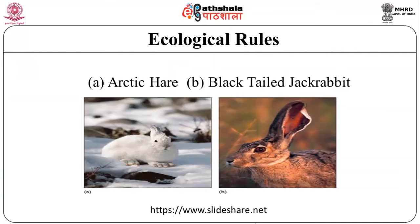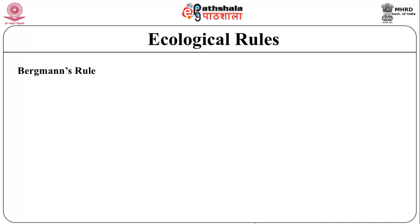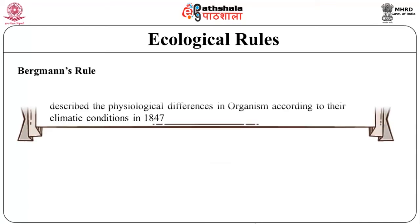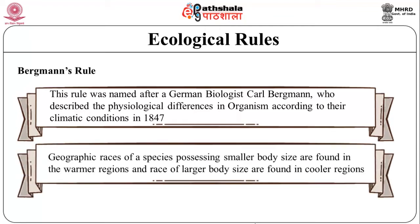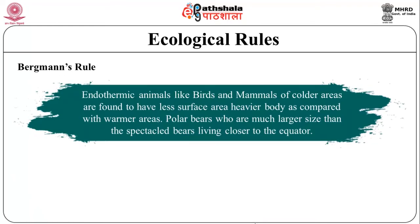Another ecological rule is Bergman's Rule, named after German biologist Karl Bergman, who described physiological differences in organisms according to their climatic conditions in 1847. According to Bergman's Rule, geographic races or ethnic groups of a species possessing smaller body size are found in warmer regions, and those of larger body size are found in cooler regions. Endothermic animals like birds and mammals in colder areas are found to have a lower surface area-to-volume ratio — that is, a heavier body build — compared to those in warmer areas.